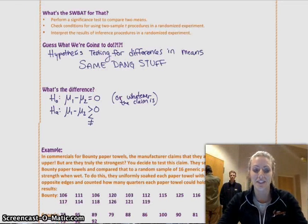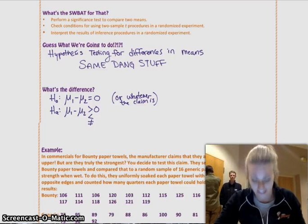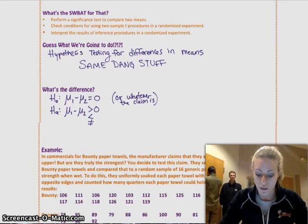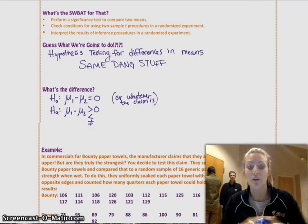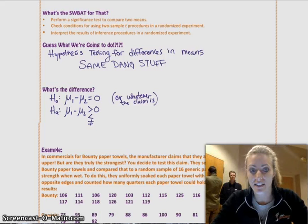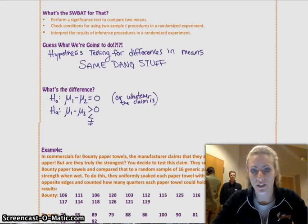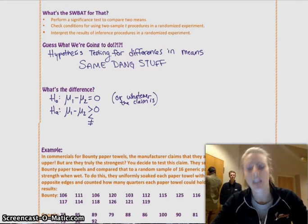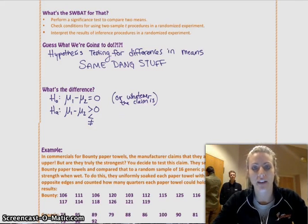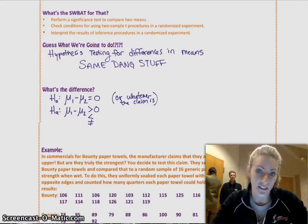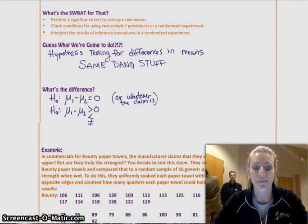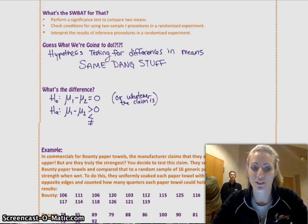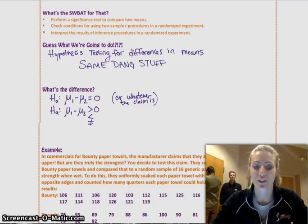Next thing that's different is the planning. The planning is different because you have to check the conditions for both populations, for both samples. Your random condition, both samples have to be random. Your independent condition, both samples have to be less than or equal to each of their populations. And then you have your normal condition. And that's the one where it gets tricky. But really, in both cases, you really have to graph the data if your sample size is less than 30. If your sample size is greater than 30, then it's okay to do the t-test, which you use when you don't know sigma. If you do know sigma, then you can use the z-test and you don't have to graph. But you should graph anyways.